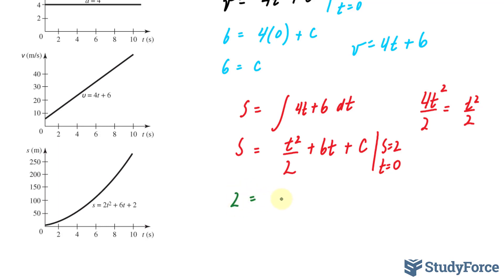2 is equal to 0 to the power of 2 divided by 2, which becomes 0. 6 times 0 is also 0 plus c. Therefore, our constant here is 2, giving us a final equation of s is equal to t squared over 2 plus 6t plus 2.